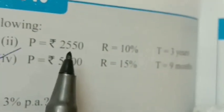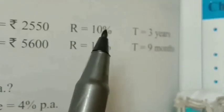Like that, the second problem also you can do yourself. Principal is given, rate is given, time is given. You have to put it in the formula and you will get the answer.